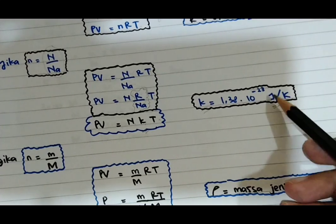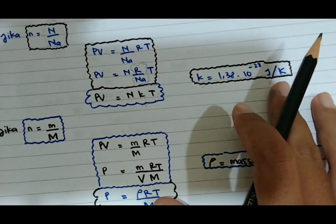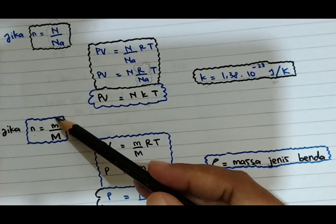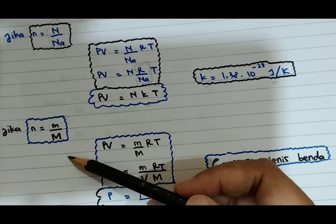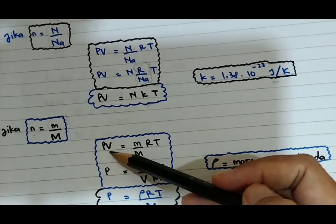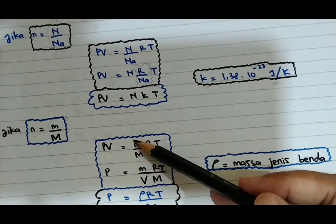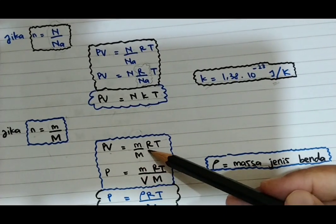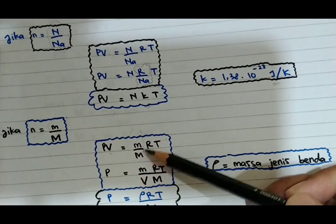Di kimia pun, jumlah mol bisa juga merupakan massa dibagi dengan massa relatif atom tersebut. Jadi bisa juga PV sama dengan NRT, di mana N kita ubah menjadi massa atom dibagi massa atom relatif, sehingga PV sama dengan (M/Mr) × R × T.